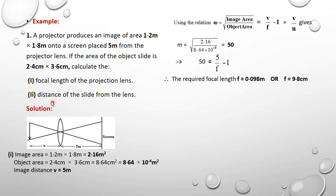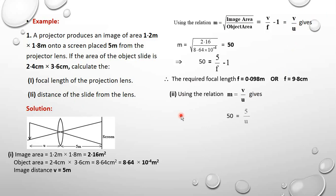Now if I want to get the distance of the slide from the lens — that is, U — I use M = V/U. I know V and M, so substituting I get U = 0.1 meters, which is the same as 10 centimeters. So that's how we work out that question.